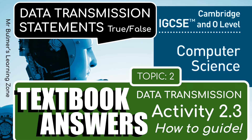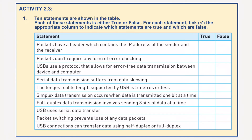Welcome back. We've got a summary question now, activity 2.3, where we have 10 statements shown in the table below, and each of these statements is either true or false. We're going to tick the boxes. Basically, this video involves you listening to my voice — it's going to be a very short video. So let's start with the first one.